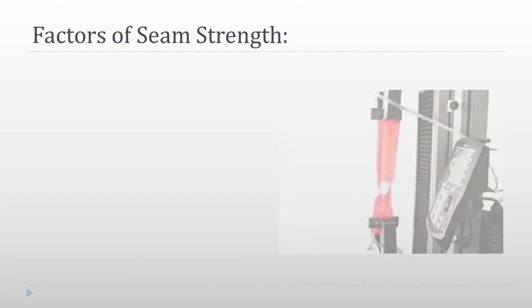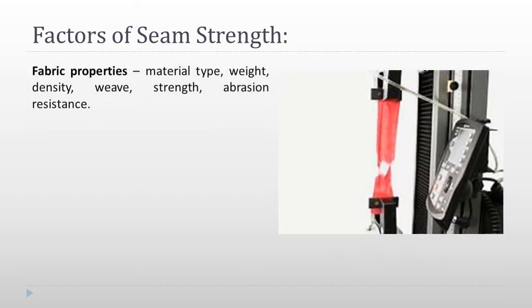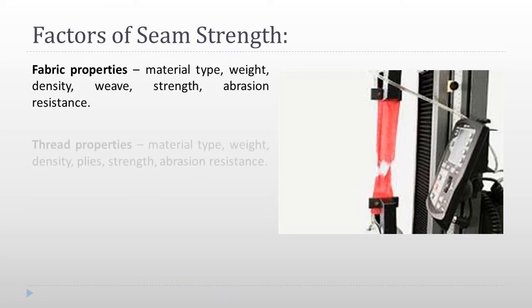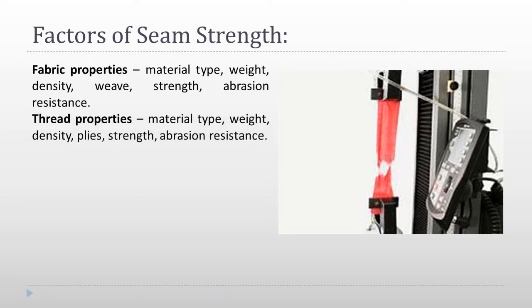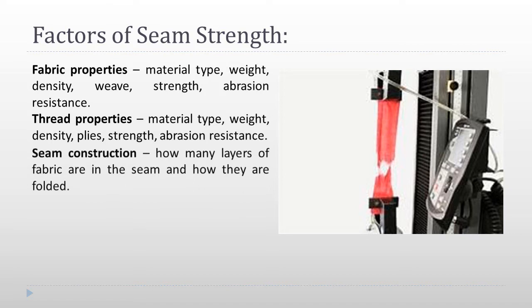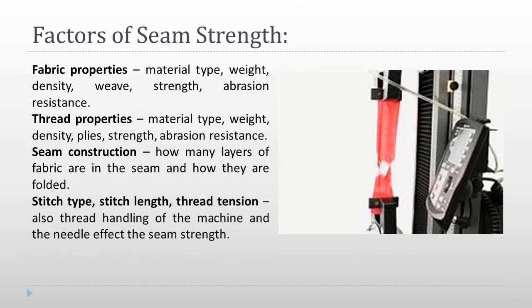Factors of seam strength. Fabric properties: material type, weight, density, weave strength, abrasion resistance. Thread properties: material type, weight, density, ply strength, abrasion resistance. Seam construction: how many layers of fabric are in the seam and how they are folded, stitch type, stitch length, thread tension. Also, thread handling of the machine and the needle affect the seam strength.